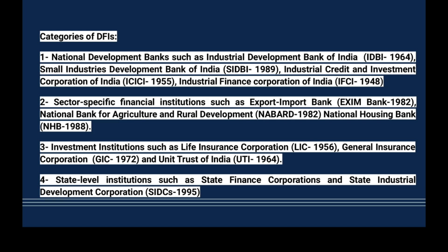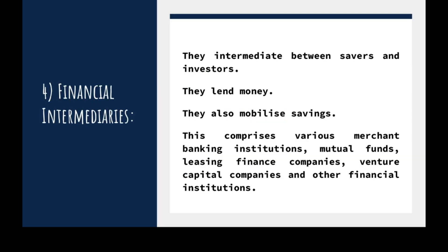The final category is financial intermediaries. An intermediary is one who stands between two other parties. For example, banks are a financial intermediary — an institution that operates between a saver who deposits money in the bank and a borrower who receives a loan from that bank.